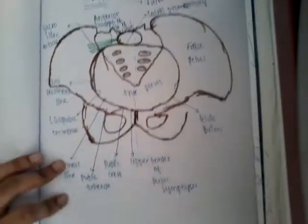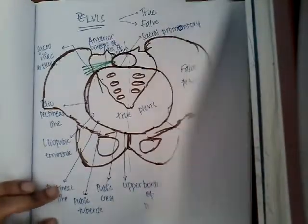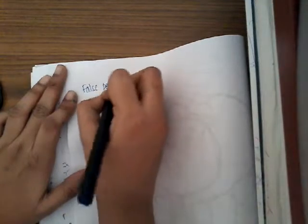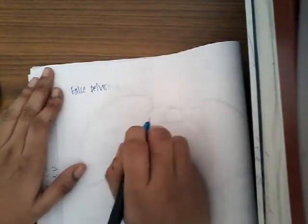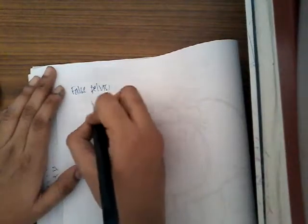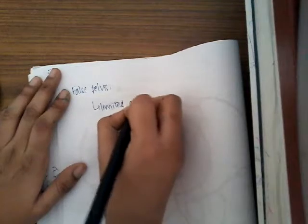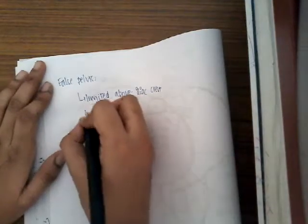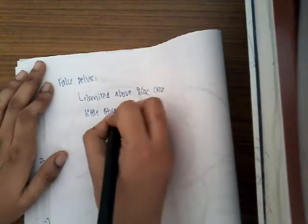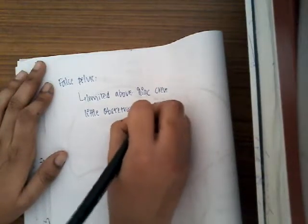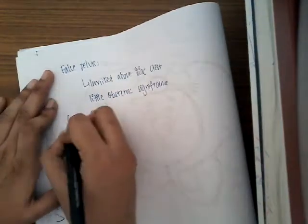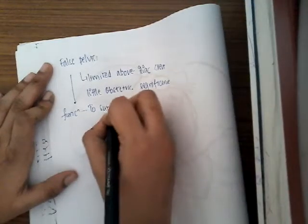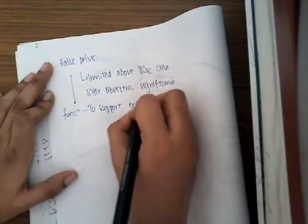Now let us learn about the false pelvis. The false pelvis is formed by the iliac portions of the innominate bone and is limited above by the iliac crest. It has little obstetric significance. The function of the false pelvis is to support the enlarged uterus during pregnancy.